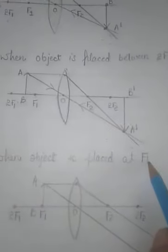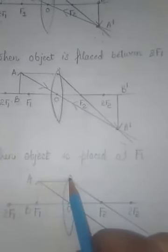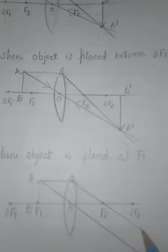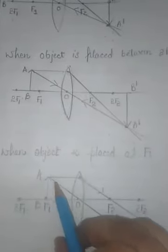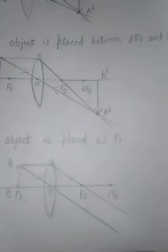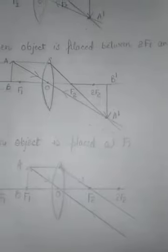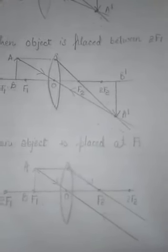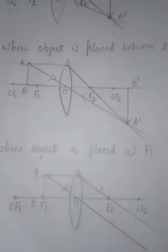The fifth diagram is when the object is placed at f1, the first focus. According to rule one, a ray coming parallel to the axis passes through f2. According to rule three, a ray passes through the optical center on the same path. The refracted rays are parallel and go to infinity, so the image is formed at infinity. The image is real and inverted, and the size of the image is very large.